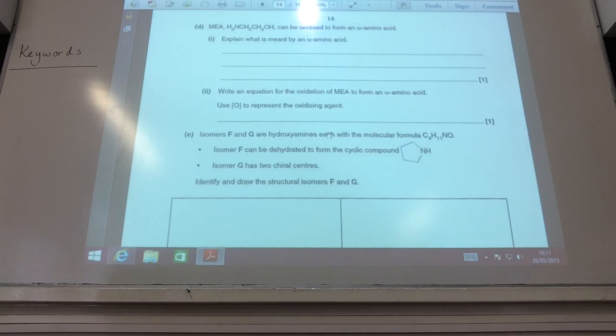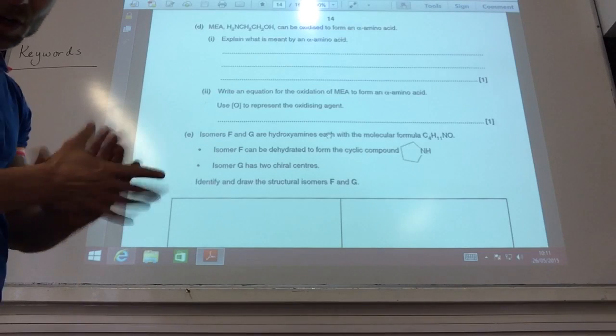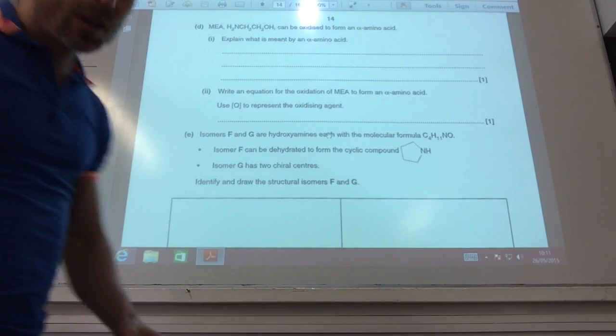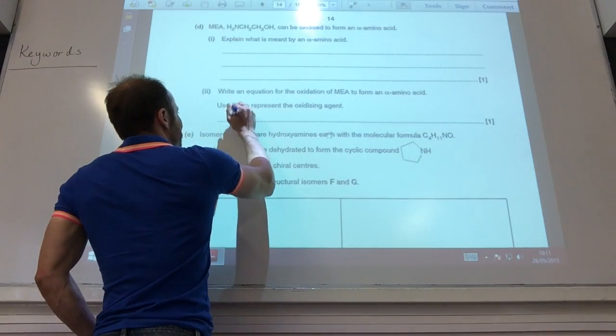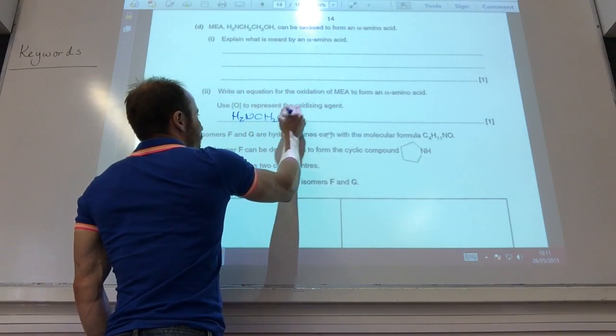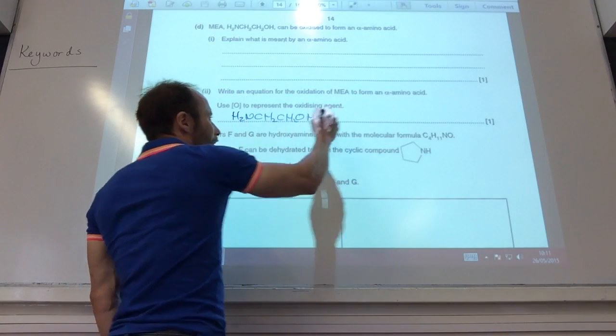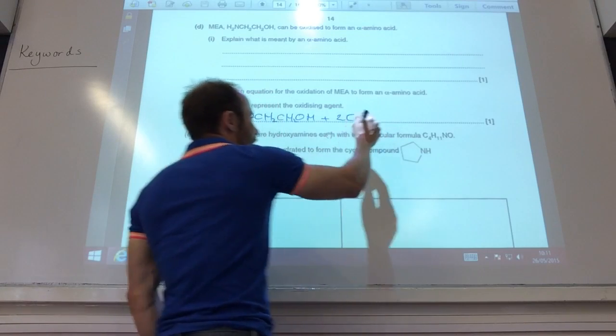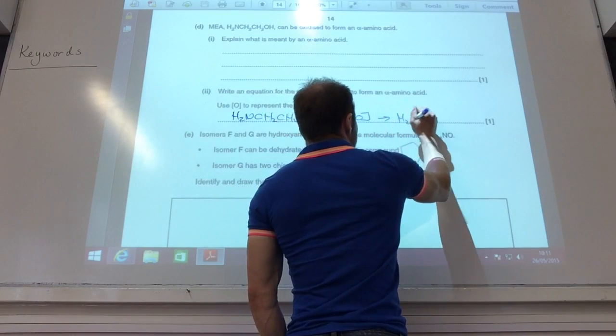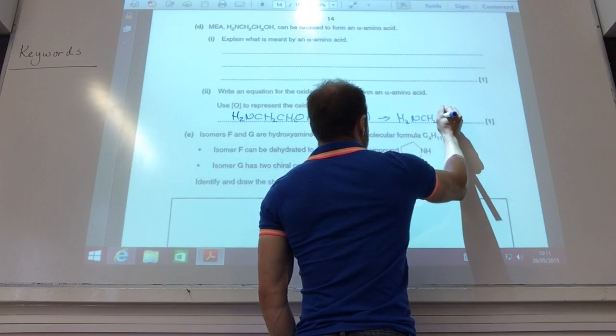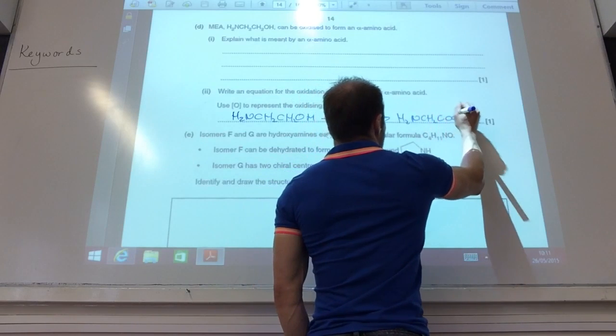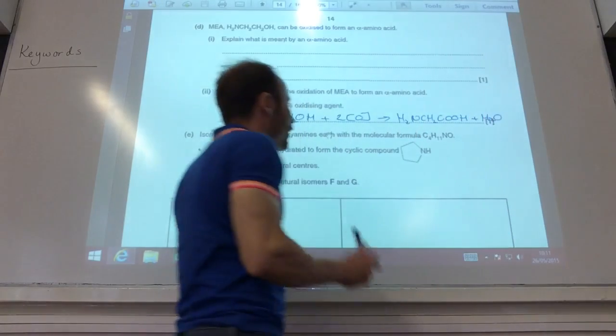Okay, amino acid time. MEA can be oxidized to give me an alpha amino acid. What is an alpha amino acid? It's where the NH2 and the carboxylic acid are attached to the same carbon atom. So we're going to write an equation for that. H2NCH2CH2OH. I've got to go all the way to a carboxylic acid, so I need two square bracket O's to give me my carboxylic acid COOH, and I also make water as well for that one.